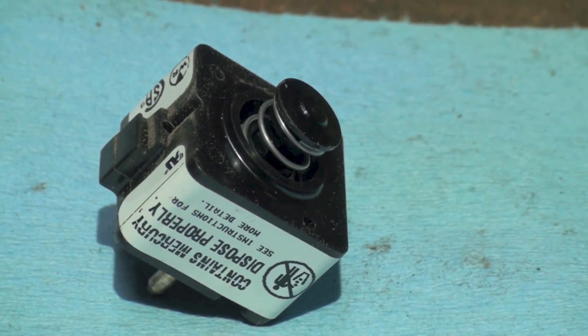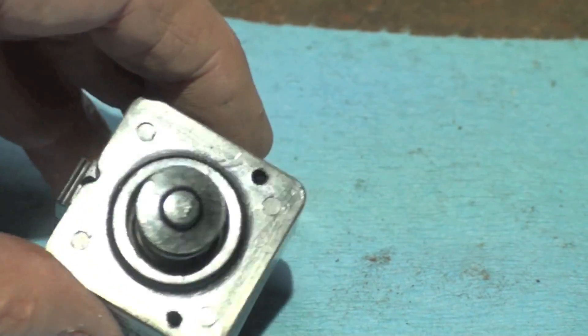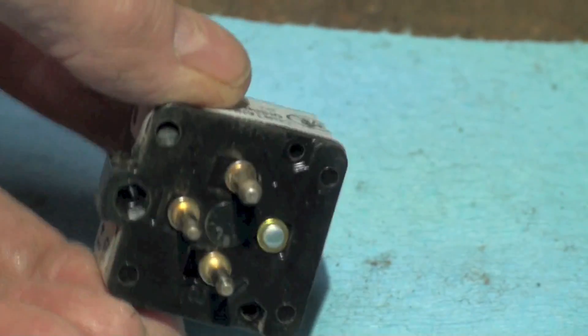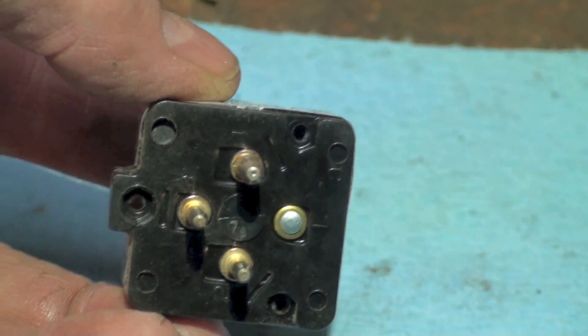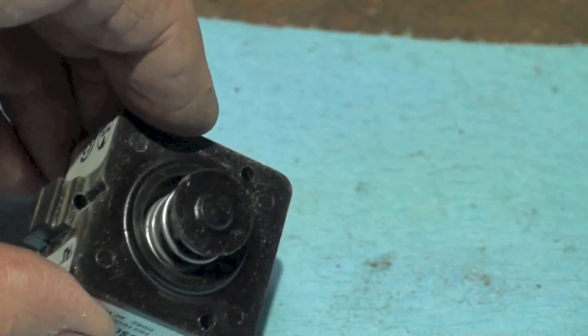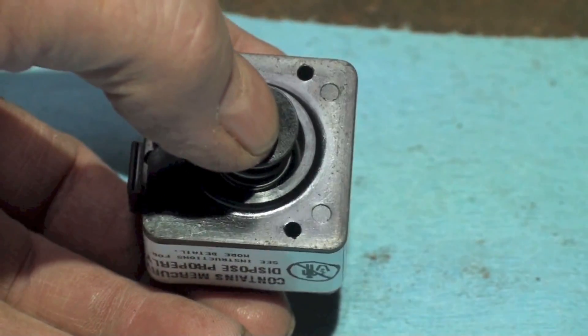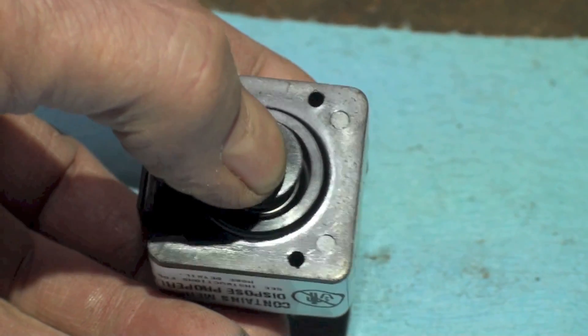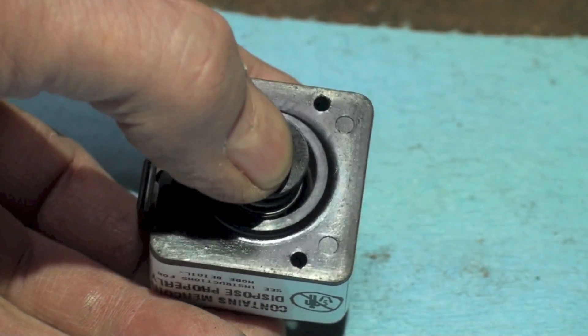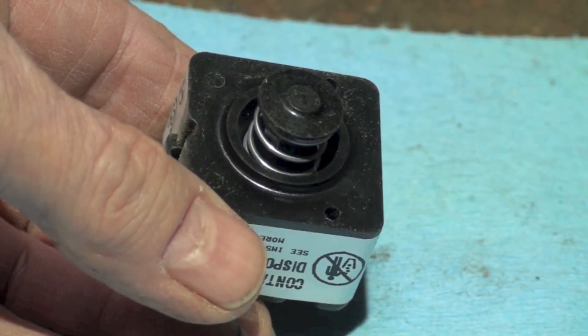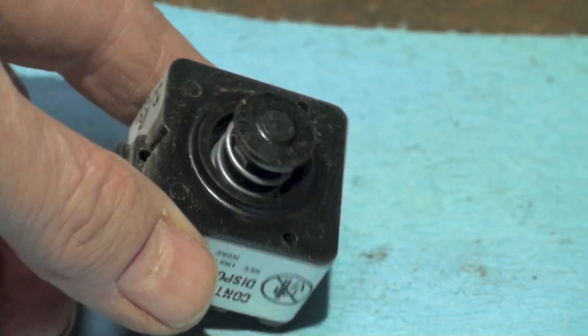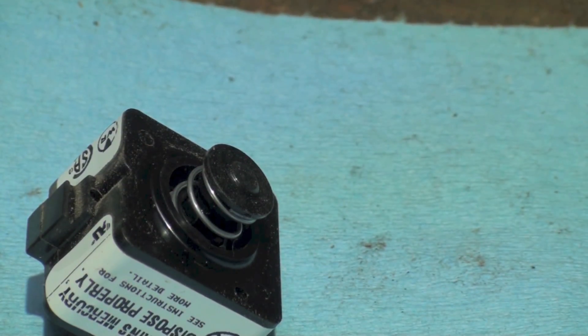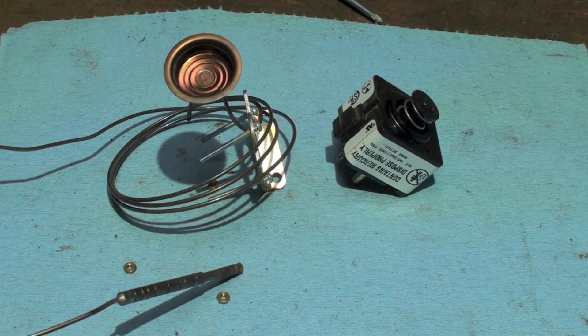Here's the other half. You can see the spring right here. Here's the connectors that connect into the gas valve. If you listen close, you can hear that switch make as the mercury expands.